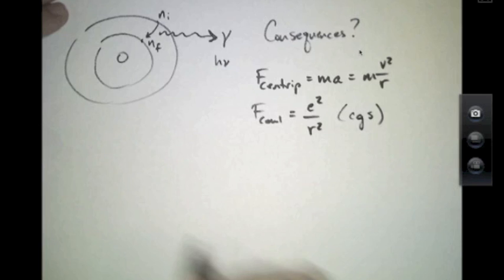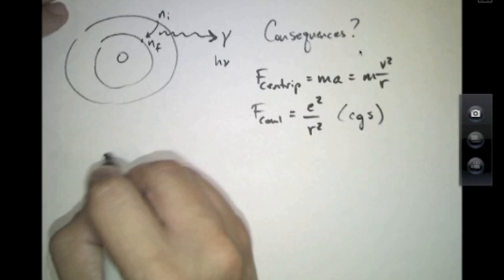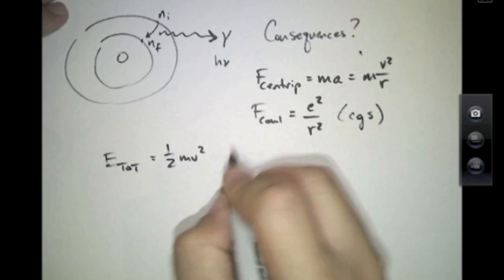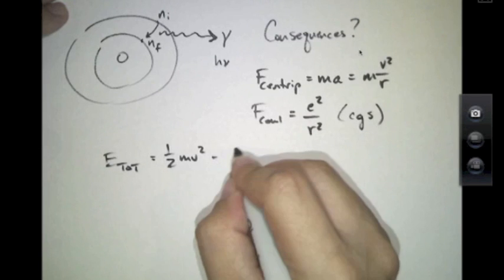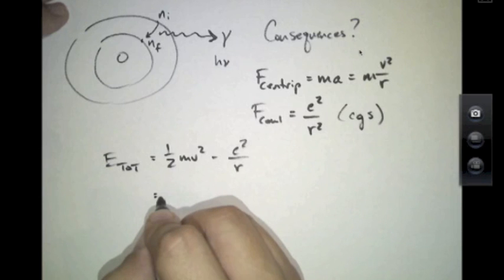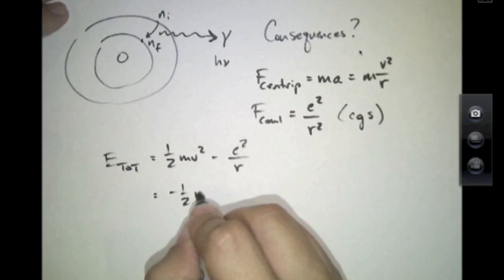This electron that's orbiting has a total energy given by 1 half mv squared minus e squared over R, in other words kinetic plus potential. And for 1 over R potentials it's well known that the kinetic energy is always equal to half the potential energy.